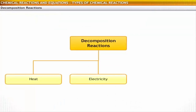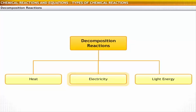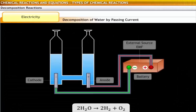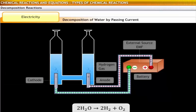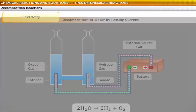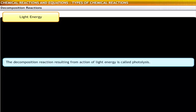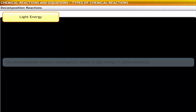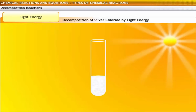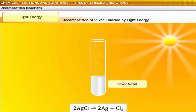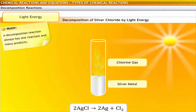Decomposition of a substance by passing current through it is called electrolysis. For example, when electric current is passed through acidified water, it decomposes to give hydrogen gas and oxygen gas. Finally, the decomposition reaction resulting from the action of light energy is called photolysis. For example, when silver chloride is exposed to light, it decomposes to form silver metal and chlorine gas. Remember that a decomposition reaction always has one reactant and many products.